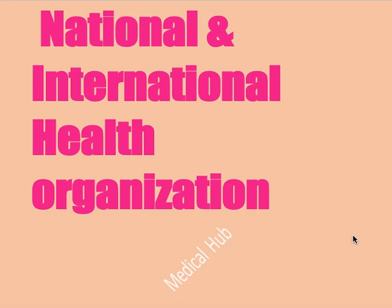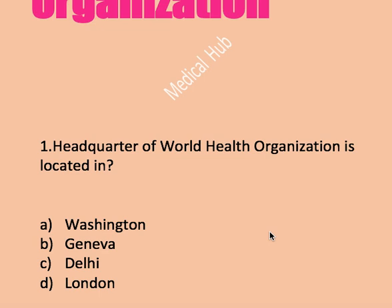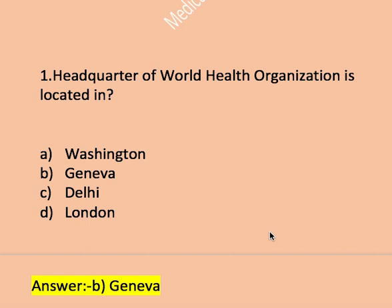Today I am going to share some questions about national and international health organizations, like UNICEF, WHO, Red Cross Society, etc. Question number one: the headquarter of WHO or World Health Organization is located in — option A Washington D.C., B Geneva, C Delhi, D London. Right answer is B, Geneva. The headquarter of WHO is located in Geneva.